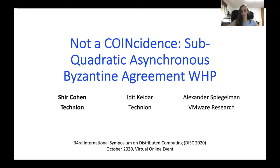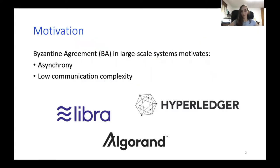This is a joint work with my advisor Edith Kedar from the Technion and Alexander Spiegelman from VMware. Just to start off with a bit of motivation, Byzantine agreement is widely used in many large scale systems such as Libra, Algorand, Hyperledger and the list goes on. It motivates both asynchrony and low communication complexity.